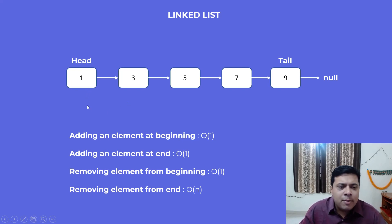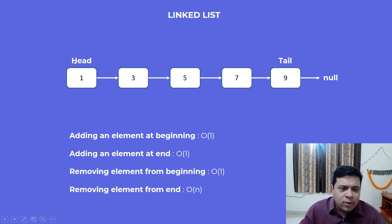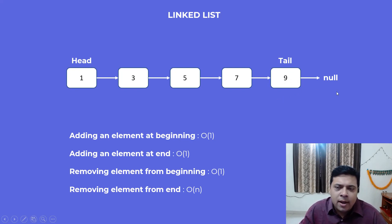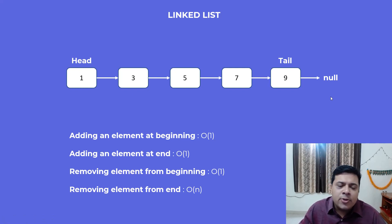This is a singly linked list because the pointers are only one-sided — so node 3 would not know about its previous node. A linked list also has a head element; in this case the head is the first element, which is 1, and the tail is the last element, which is 9. The tail points to null, which signifies the end of the linked list, and this is the property we are going to use to solve our problem.